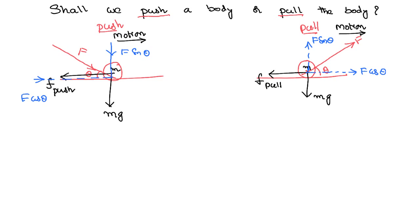But look at the normal reaction. Normal reaction means there will be some resultant force acting on the lower surface because of the upper surface in the downward direction — normal reaction will be of equal magnitude, opposite in direction, and normal to the surface of contact. In the push case, normal reaction equals weight plus F sin theta, because both act in the downward direction. But in the pull case, normal reaction equals weight minus F sin theta, because F sin theta is acting in the upward direction.